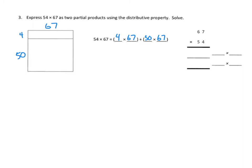We'll add them up, and that's basically partial products. Let's go to the right-hand side and look at how the partial products work out. We would have 4 times 67 and 50 times 67. Once we figure those out, we add them together to get our product. For 67 times 4: 4 times 7 ones is 28 ones, so 8 and 2 tens. Then 4 times 6 tens is 24 tens, plus 2 more is 26 tens. So that's 268 — one of our partial products.